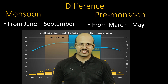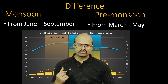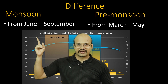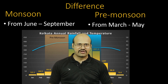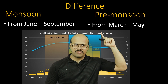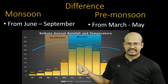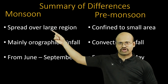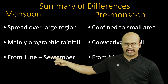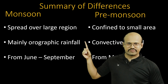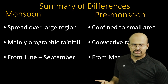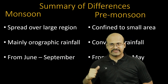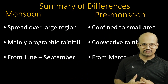There is also a difference in timing: monsoon rainfall occurs in the months of June to September, while pre-monsoon rainfall occurs from March to May. We can clearly see this in the chart for Kolkata city — there is pre-monsoon rainfall from March to May and monsoon rainfall from June to September.